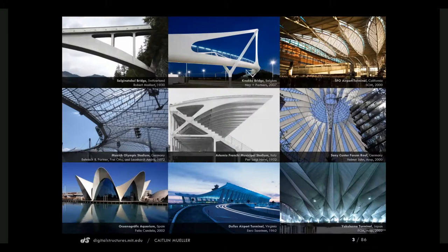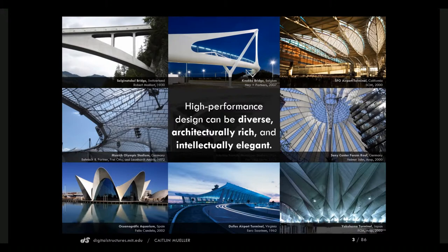These are all buildings and structures that differ from each other substantially in how they look, in the materials they use, in their context, in their scale, and in their form. And yet they're united in the ways that they use material efficiently — using material only where it's needed, achieving this efficiency through formal innovation and the way that the material is arranged. Thinking interdisciplinarily and using technology and performance in design is not overly constraining, but actually unlocks and opens new ideas. For me, high performance design is beautiful, diverse, architecturally meaningful, and intellectually elegant.